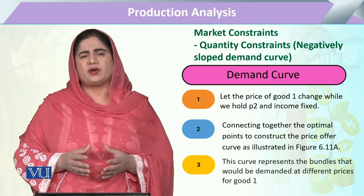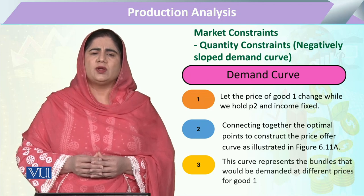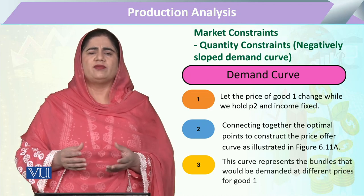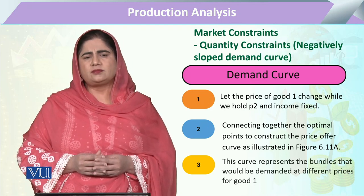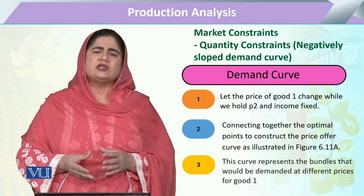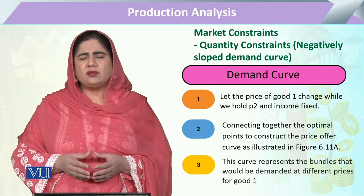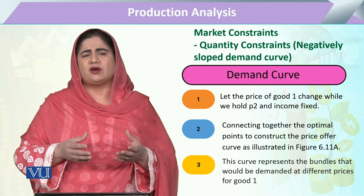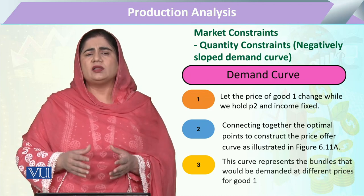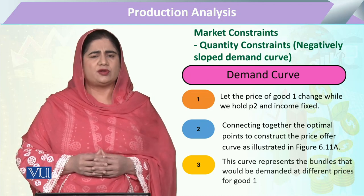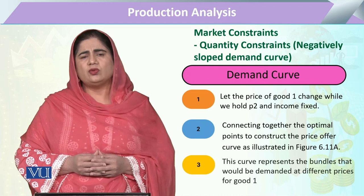We mostly express the demand function, indifference curve, or utility function of any consumer through two commodities — on the x-axis one commodity, and commodity 2 on the y-axis. The demand of that consumer is mostly expressed through his utility function or indifference curve, where the consumer has the same indifference curve by combinations of two commodities: different bundles like x1, x2, or any other bundle. All these bundles will have the same utility level or the same indifference curve for the consumer.